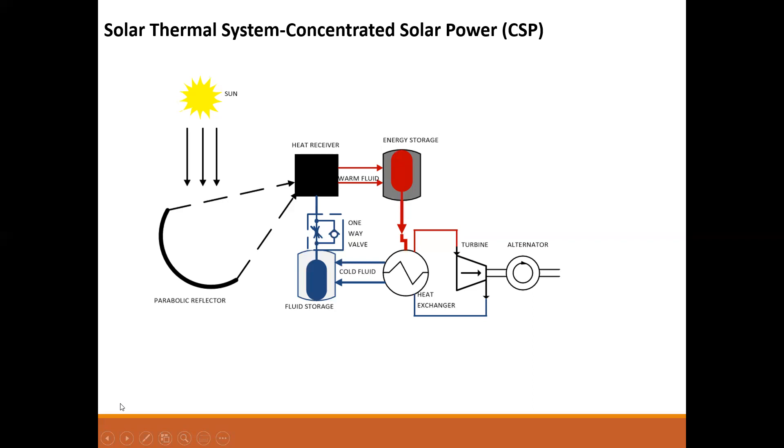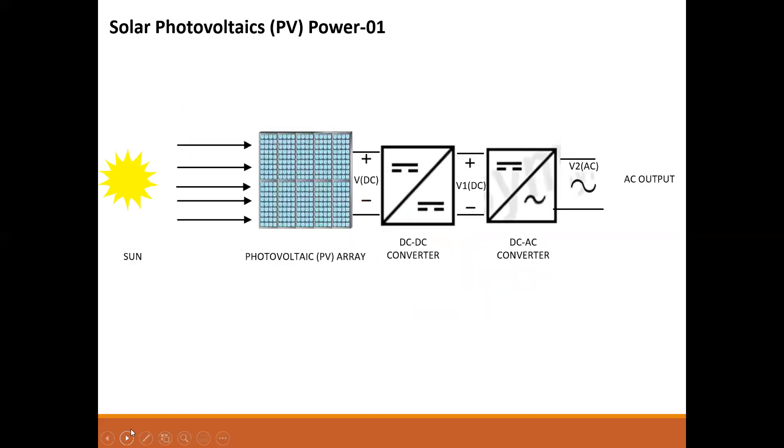Having talked about solar thermal systems, we go to solar PV systems. In a nutshell, this is a simple arrangement of a solar PV system. We have the sun which gives irradiation. This irradiation strikes the PV array, which converts the incoming solar radiation into DC power.